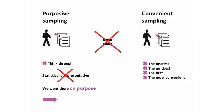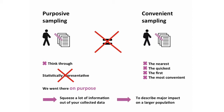That's a purposive sample where you can squeeze a lot more information out of the data you've collected to describe in broad outline the major impact on a larger population.